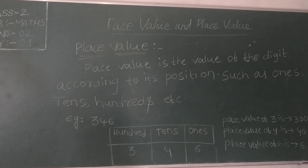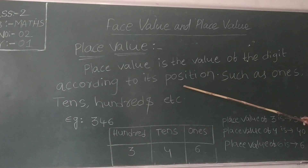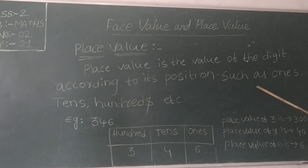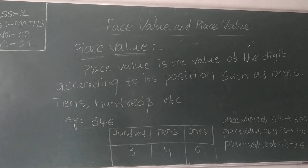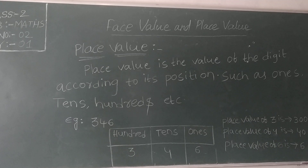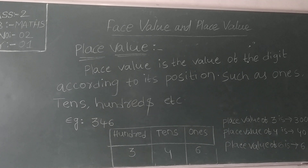So let us continue to our next topic: place value. Place value is the value of a digit according to its position, such as 1s, 10s, 100s. It means the value of the digit depends on its position in the numeral, unlike face value which is the digit itself.